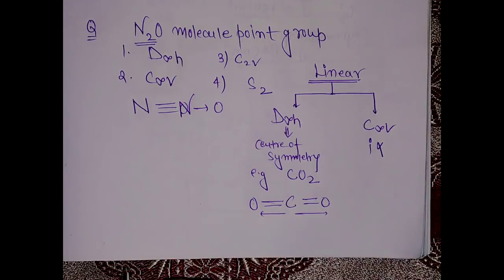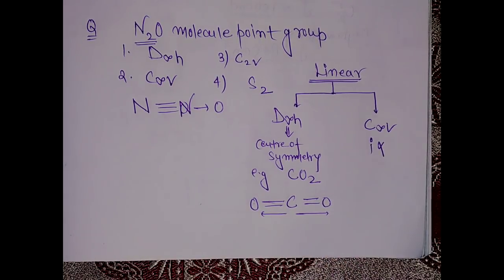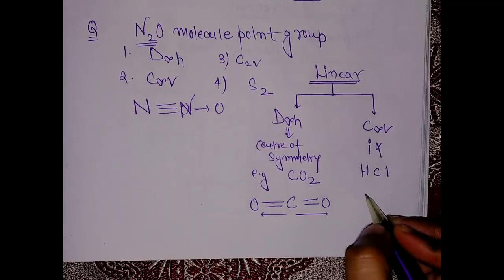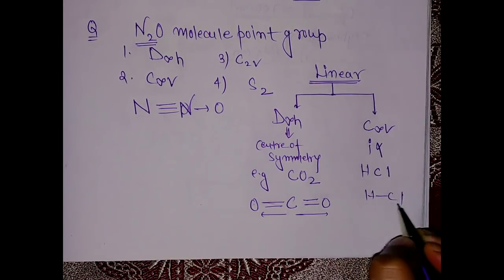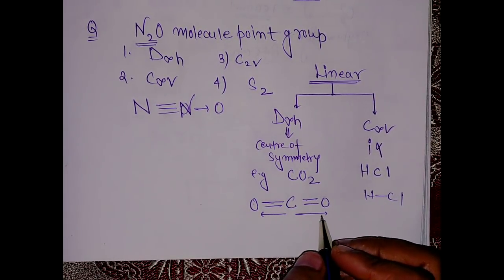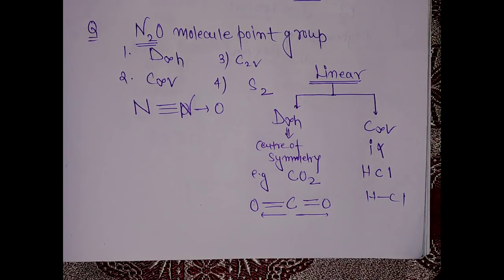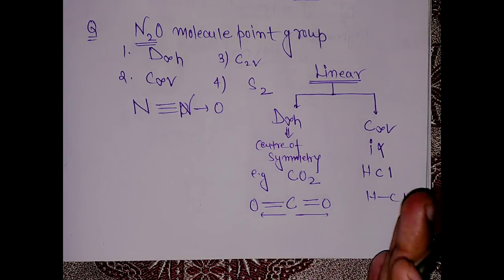But in C∞v, let's say we have a linear molecule which is your HCl. See, there is no center of symmetry. So this is a linear molecule which has a point group of C∞v.